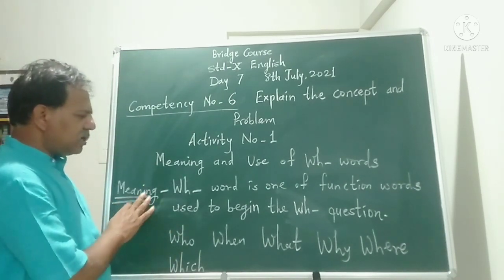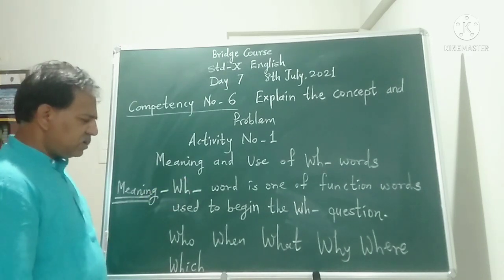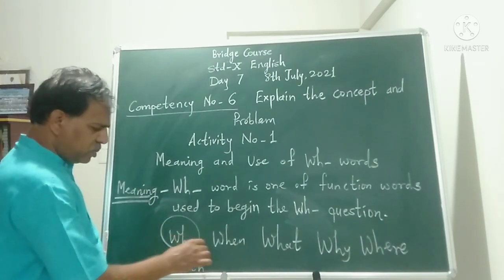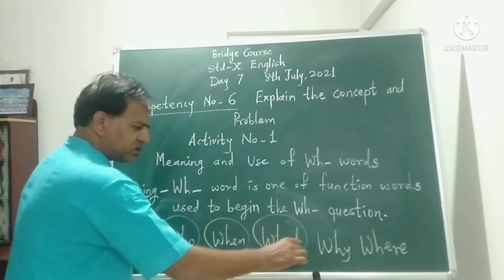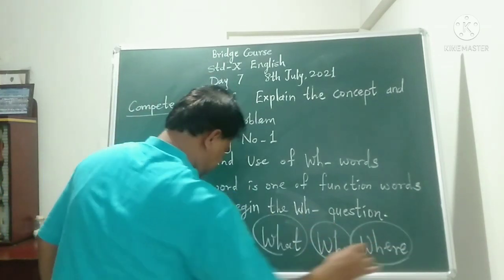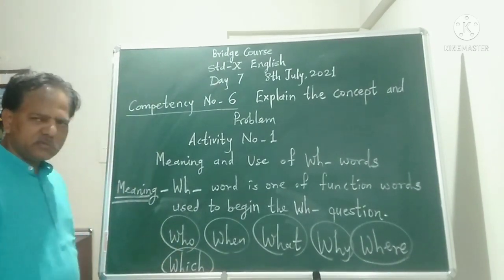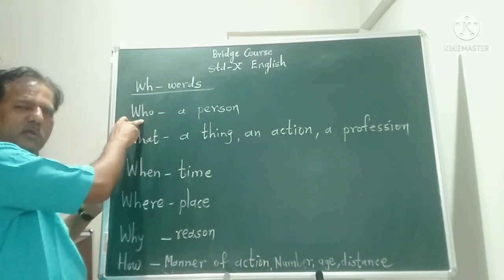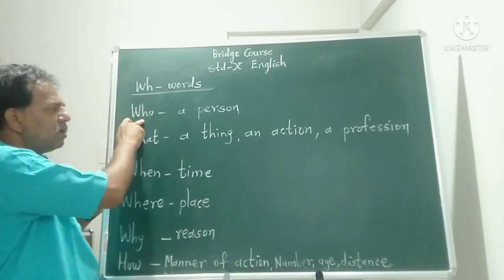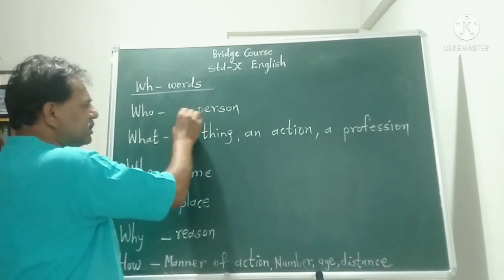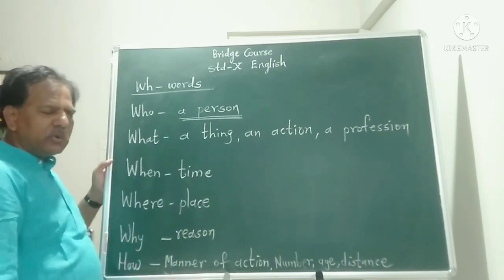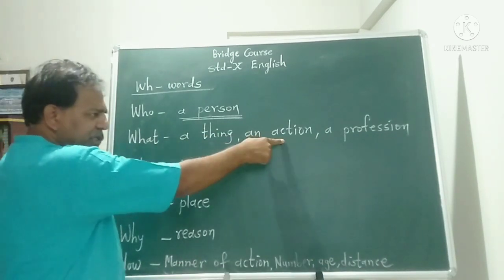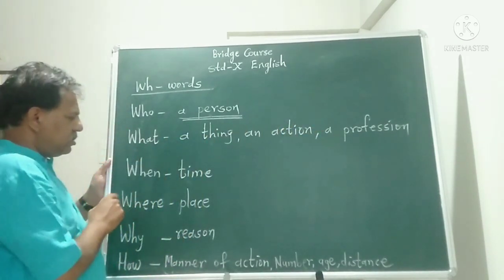A WH word is one of the function words used to begin a WH question. They are WHO, WHEN, WHAT, WHY, WHERE, WHICH, and some more. In WH questions, when the question begins with WHO, the answer gives us a person. So WHO represents a person, WHAT represents a thing, an action, or a profession. WHEN refers to time.